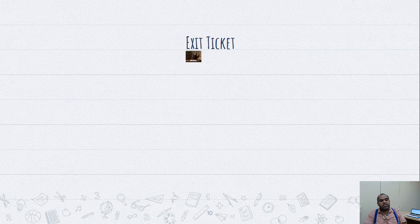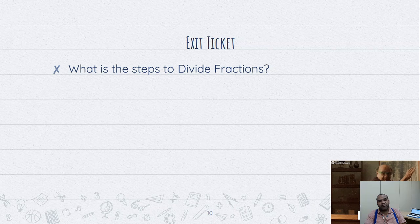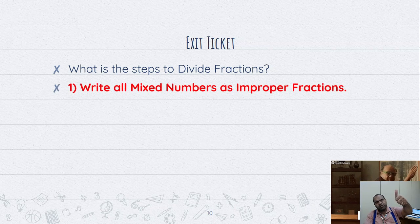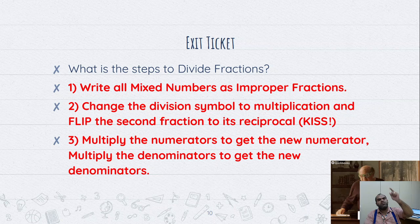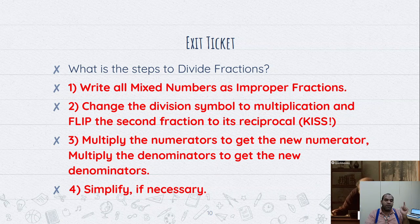Here is our class. Remember our exit ticket. What are the steps to divide fractions? Step number one, write mixed numbers as improper fractions. Step number two, switch division to multiplication and flip the second fraction. Step number three, numerator times numerator, denominator times denominator. And for the last one, simplify if necessary. See you next class. Bye.